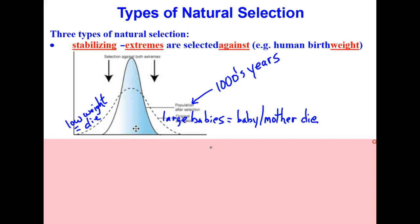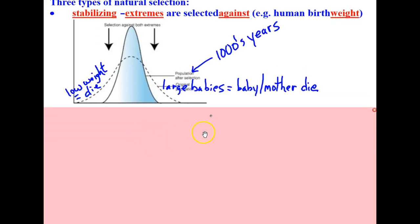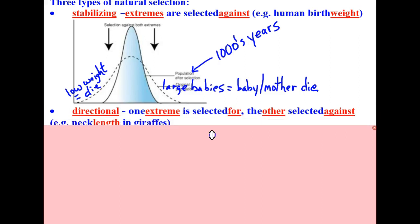Our next type of natural selection is directional selection. This is when one extreme is selected for, the other extreme is selected against, and a great example of this is neck length in giraffes.